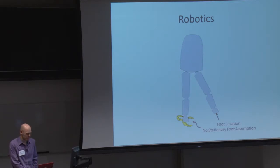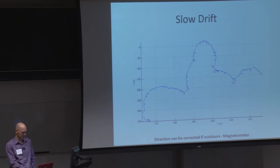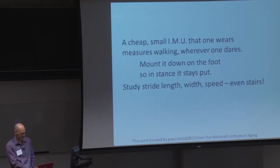And if you're a roboticist, which I'm really not, you might be interested in getting foot location without having to build a kinematic chain off of the other foot. And so that's something for you guys to think about, is whether this would be useful for robotics. And there are some limitations that you can come talk to me about in the poster. But I am going to leave you with the take home message in case you don't visit. A cheap, small IMU that one wears. Measures walking wherever one dares. Mount it down on the foot so in stance it stays put. Study stride length, width, speed, even stairs. Thank you.